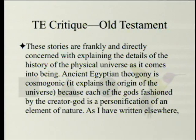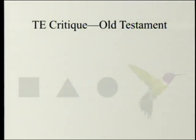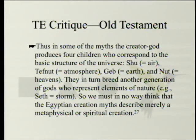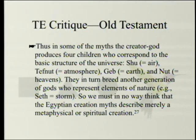Because each of the gods fashioned by the Creator God is a personification of an element of nature, in some myths the Creator God produced four children who correspond to the basic structure of the universe: Shu (air), Tefnut (atmosphere), Geb (earth), and Nut (heavens). Interestingly, water is not in that group of four. They in turn breed another generation of gods representing elements of nature — for example, Seth, which is storm. So we must in no way think that the Egyptian creation myths describe merely a metaphysical or spiritual creation.